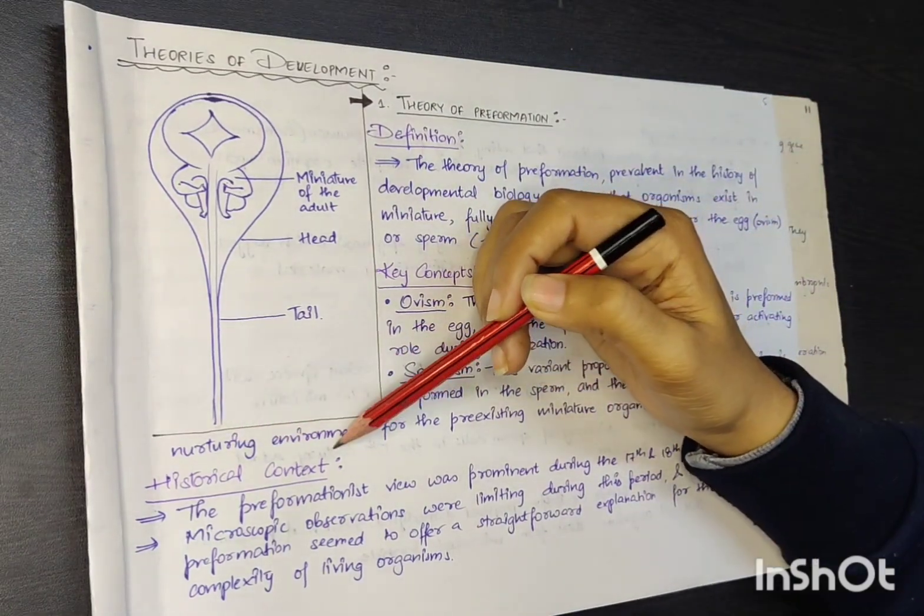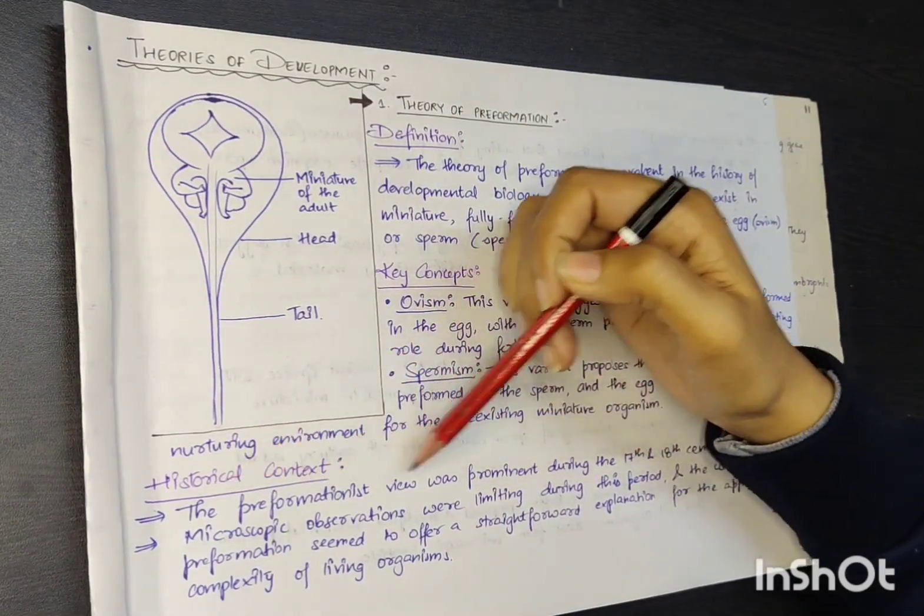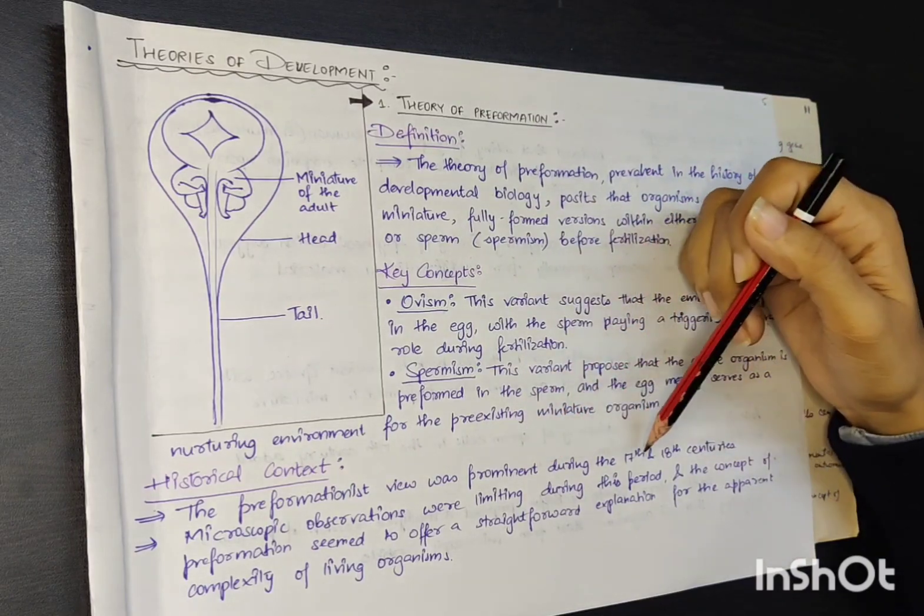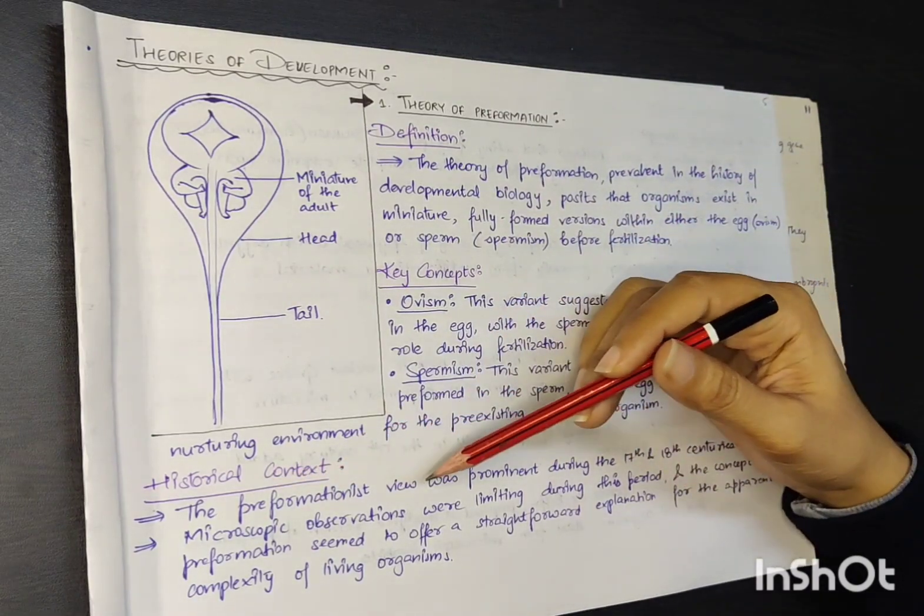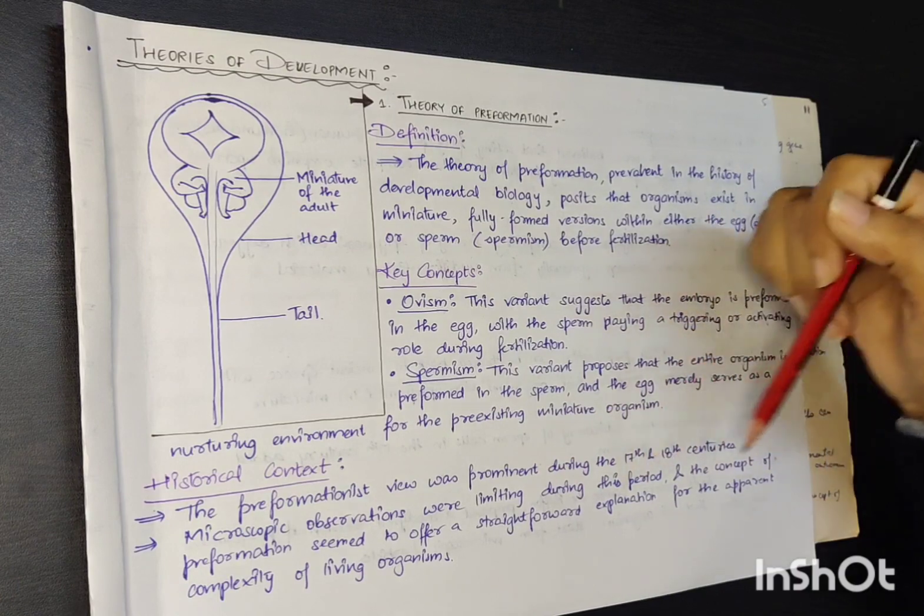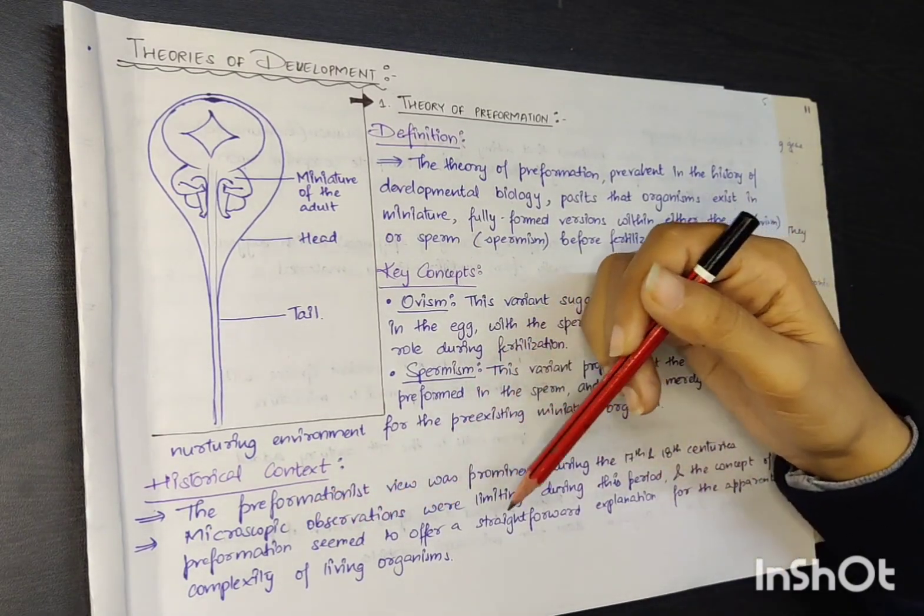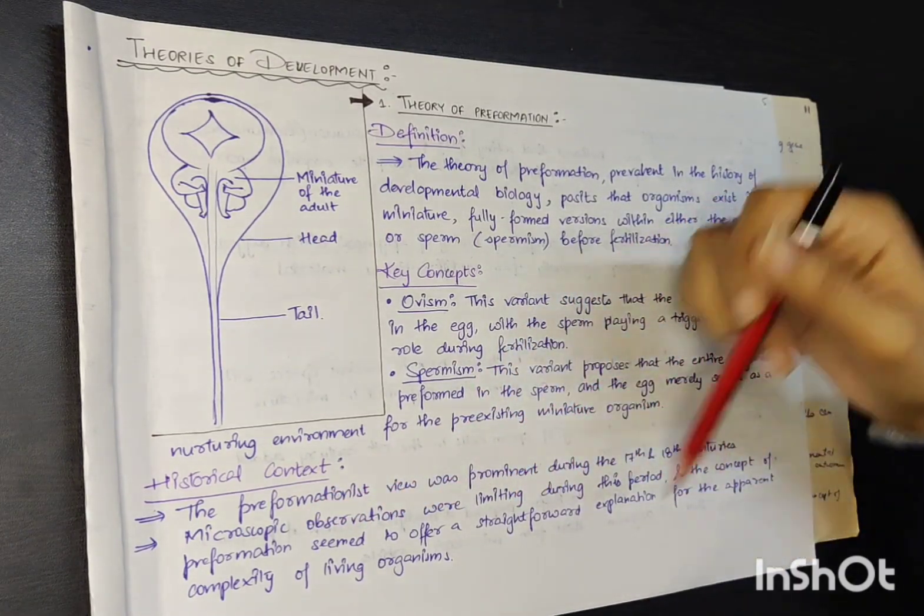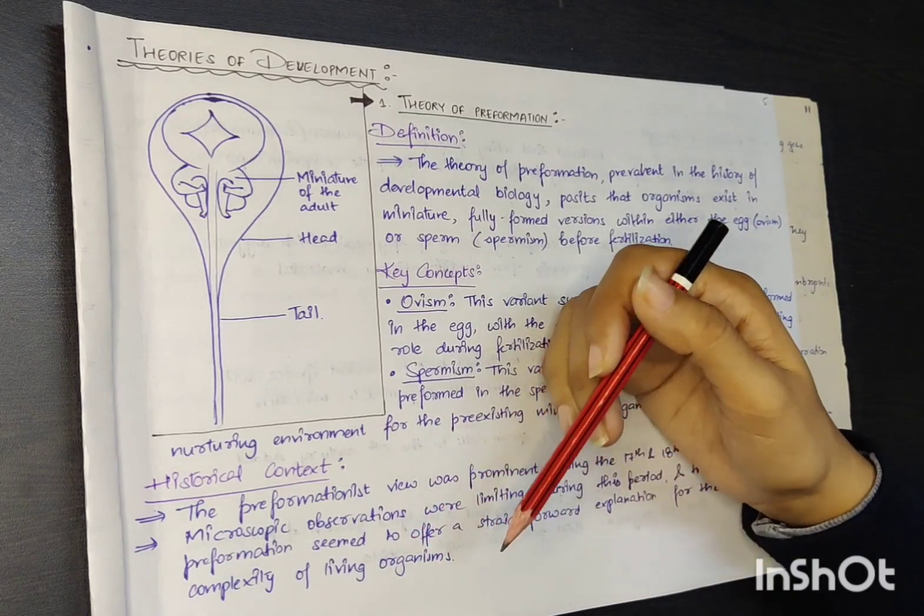The historical context: The pre-formationist view was prominent during the 17th and 18th century. Microscopic observations were limited during this period, and the concept of pre-formation seemed to offer a straightforward explanation for the apparent complexity of living organisms.